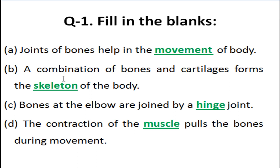Second blank: a combination of bones and cartilage forms the blank of the body. When bones and cartilage combine, they form the skeleton of the body.